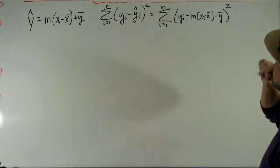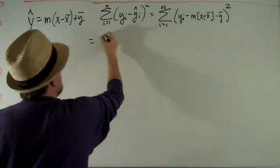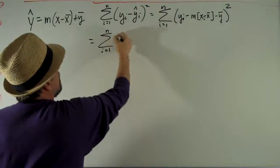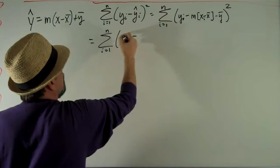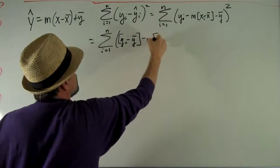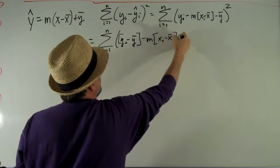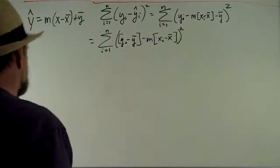Let me move things around a little bit. This is going to be, as i goes from 1 to n, yi minus y bar minus m times xi minus x bar squared. That looks a little more symmetrical there.